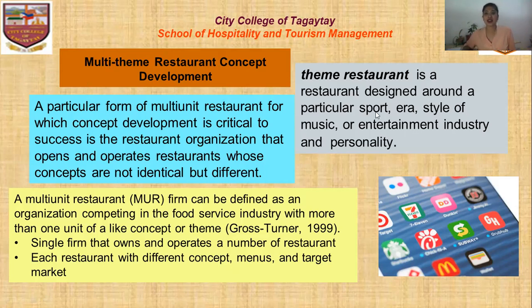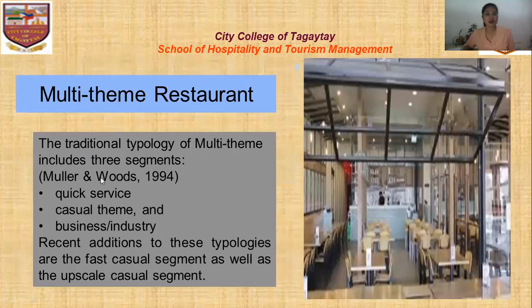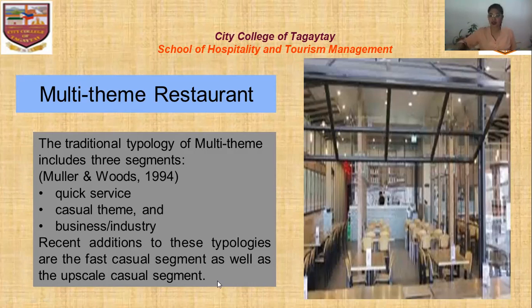A theme can be a specific or particular one — for example, sports, or era style, or music, or entertainment industry and personality. Multi-theme restaurants have different segments: quick service, casual, and business in the street or industry. Recent additions to this typology can be fast casual segments or upscale casual segments.